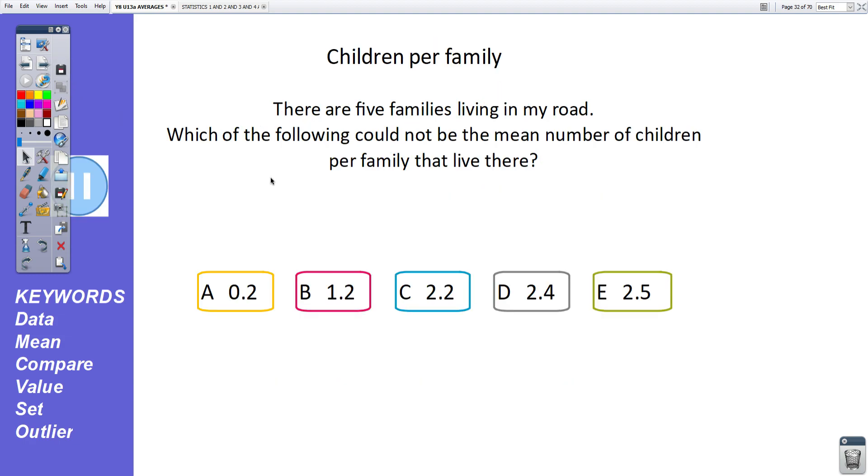Okay. Now, the final question for today, the final thing that I want you to consider. Children per family. There are five families living in my road. Which of the following could not be the mean number of children per family that live there? Okay. This one's quite basic. Pause the video and unpause it when you're ready to check your answer. Okay. The answer, 0.2 children. Yes. As you know, we always leave means to the decimal place. We don't round them up or down, but we would never have 0.2 children.